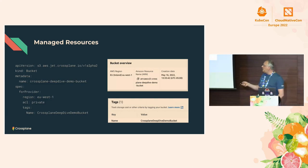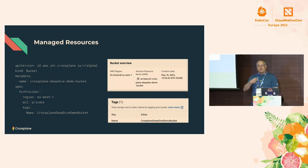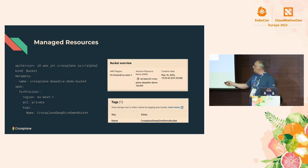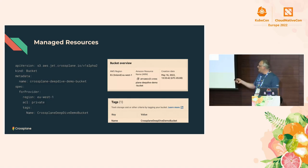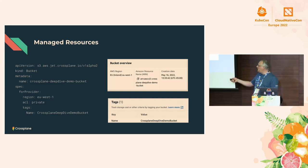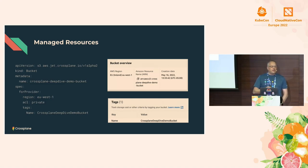We have the spec, which is the desired state — what we want the remote object's state to be. We have a special stanza called forProvider, which is what we actually send to the remote API server. The spec in a managed resource is high fidelity: if the cloud provider has 100 different configurable things, Crossplane will have 100 different settings. The goal of a managed resource is to be as high fidelity as possible to the remote resource.